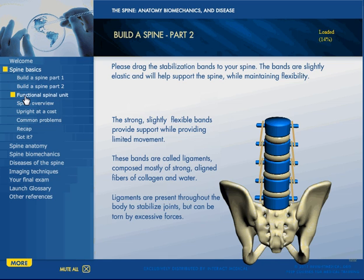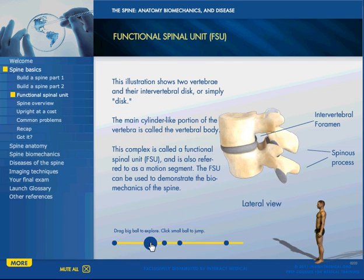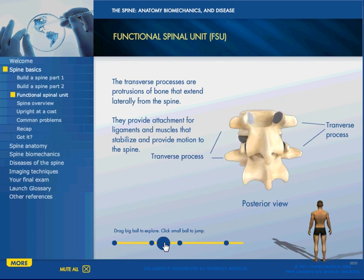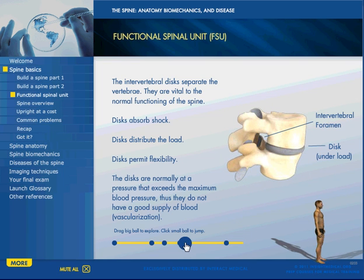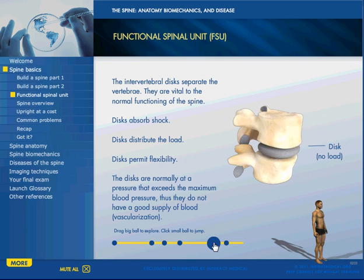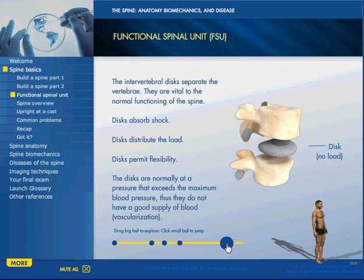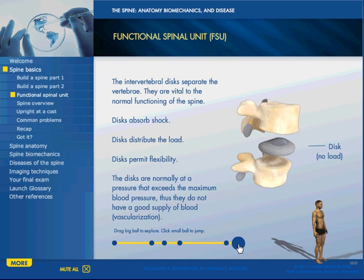So now we discuss the functional spinal unit, which is how the spine is usually studied and described. It consists of two vertebrae and a disc. Here we introduce a new feature where you can drag the ball to control the animations on the screen, and we see that different features are named as we rotate it, with text appearing explaining what's going on.